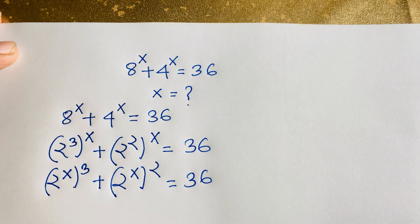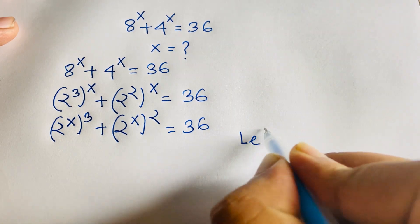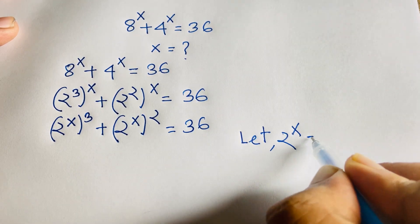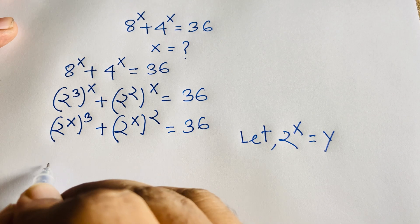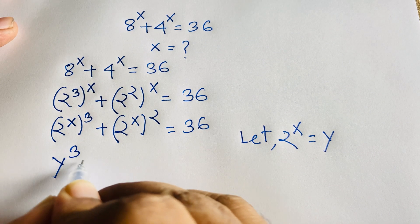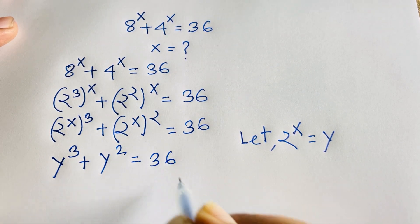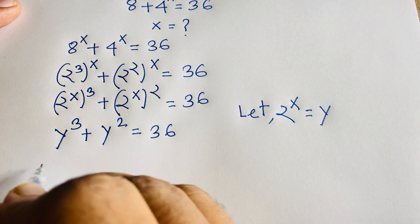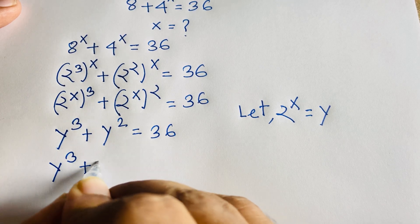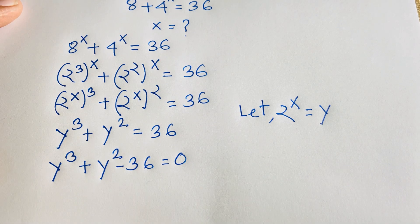Now at this moment, let 2 to the power x equal y. So I can say it will be y to the power 3 plus y to the power 2 is equal to 36. I move 36 to the left side as negative, so y to the power 3 plus y squared minus 36 is equal to 0. Now it is a cubic equation.